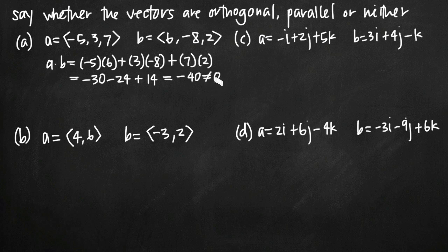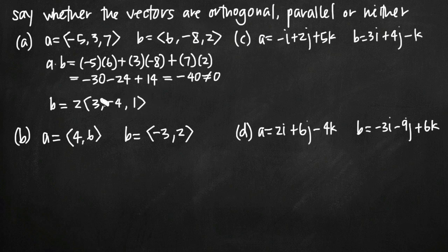Only if the dot product is equal to zero can we call the vectors orthogonal, so we know that they're not orthogonal. Now if the vectors are parallel, their components will be equal to one another, or their factored components will be equal to one another. For example, if we had two vectors negative five, three, seven and negative five, three, seven, they would be parallel. Or if we could factor something out — like for vector b, we can factor out a two to get two times (three, negative four, one). If that factored version matched vector a's components, we could say the vectors were parallel. But that doesn't happen in this case, so these vectors are neither orthogonal nor parallel — the answer is neither.